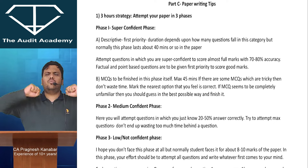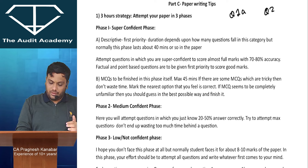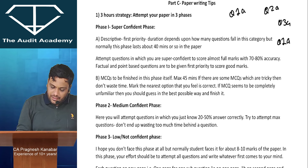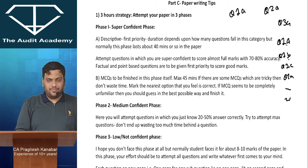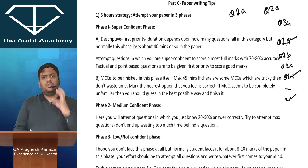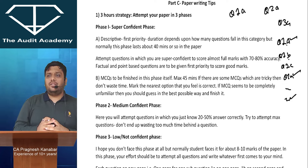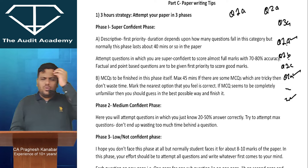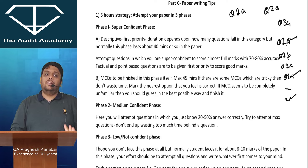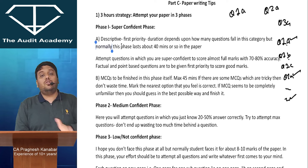In phase one, attempt all the questions where you are super duper confident. When going through the paper, if question 1A, 2A, 3A - you are confident - leave one page per question: 1A, 1B, 1C each get one side. Then attempt 1A, 2A, 3A - whatever you are extremely confident about. Finish off your descriptive questions where you don't even need 30 seconds to think; you know it by heart. Then pick up MCQs. So phase one is: descriptive questions where you are super confident, and MCQs.